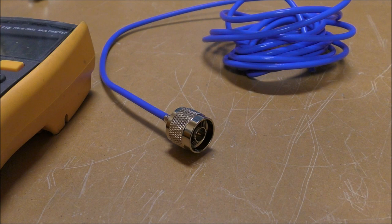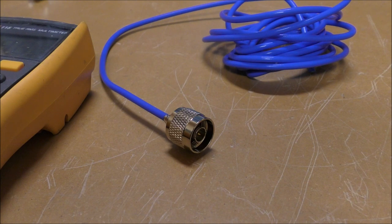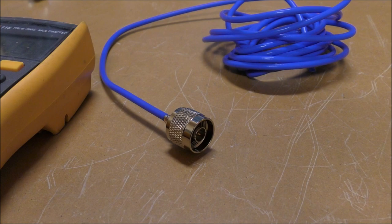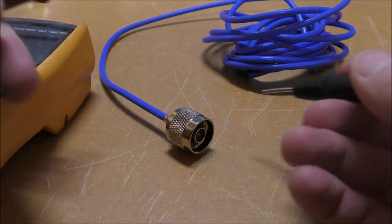So the last thing we should do is just check to make sure that we've got no short in our connector. Always a good idea to do this before you solder the outer to the connector, just in case. So we stick our meter on continuity test. We can hear that I've got that working by touching the probes together.